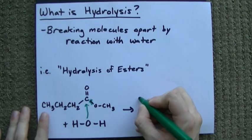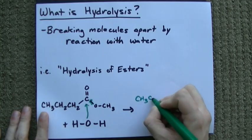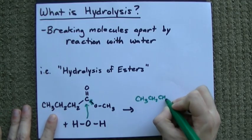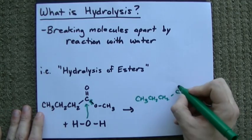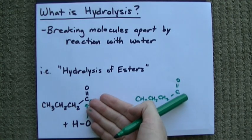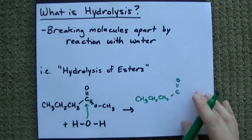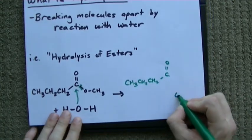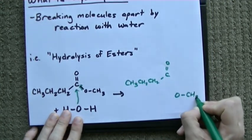What happens in the end is you end up with your CH3CH2CH2CO. See how there's that part of the molecule? And separately, we end up with our OCH3.